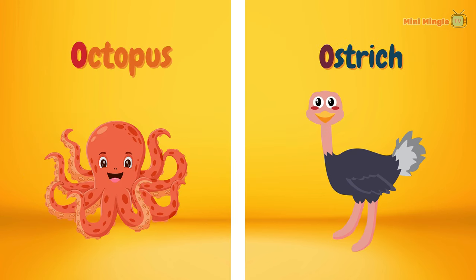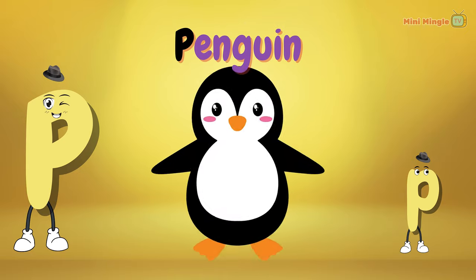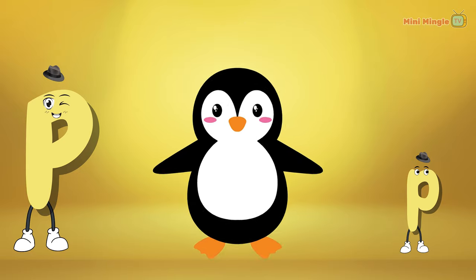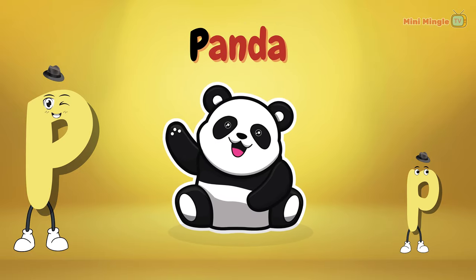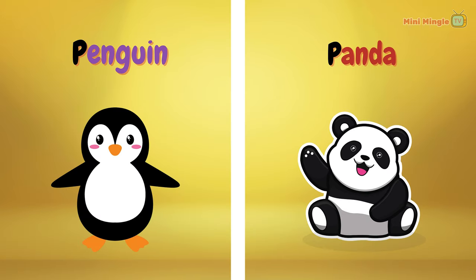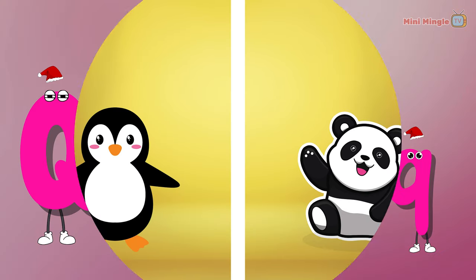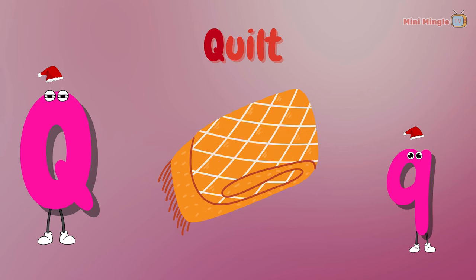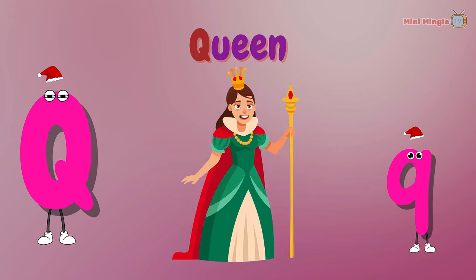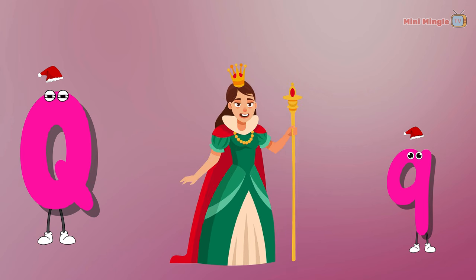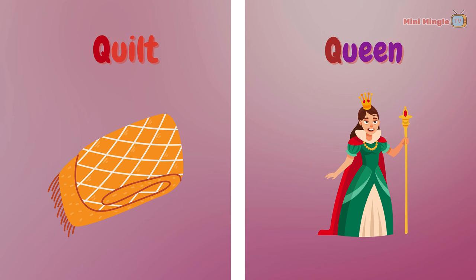Octopus and ostrich. P for penguin. P for panda. Penguin and panda. Q for quilt. Q for queen. Quilt and queen.